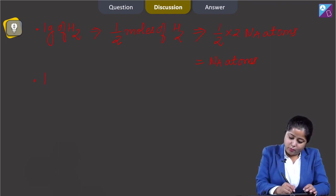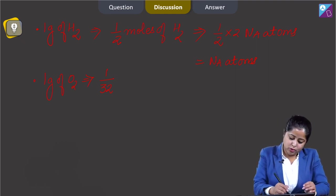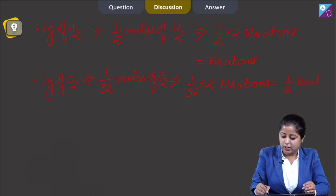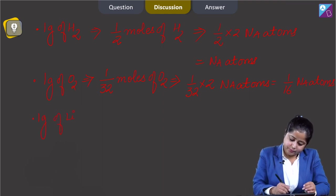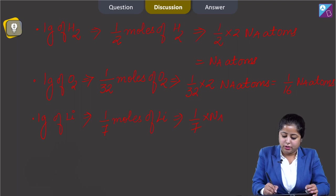Next is 1 gram of O2: number of moles = 1/32, since the molar mass of O2 is 32. Number of atoms = (1/32) × 2 × NA = (1/16) NA atoms. Moving to next: 1 gram of lithium — number of moles = 1/7, since the atomic mass of lithium is 7. Number of atoms = (1/7) × NA.